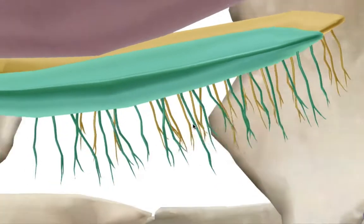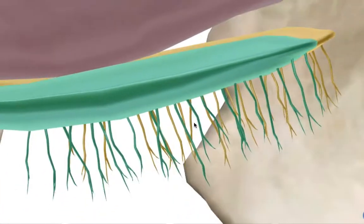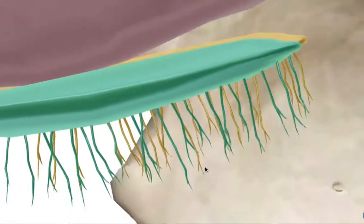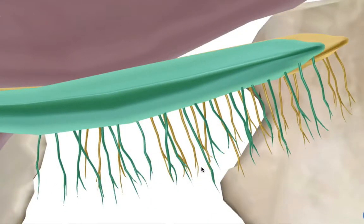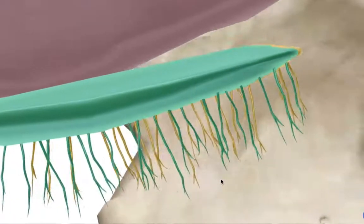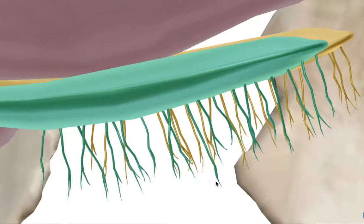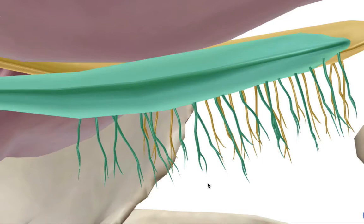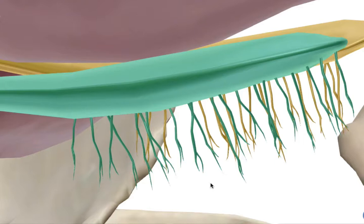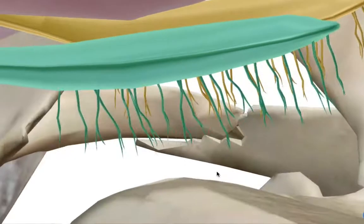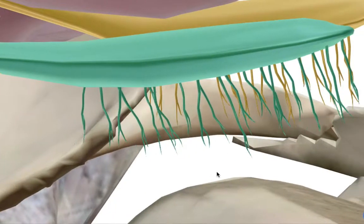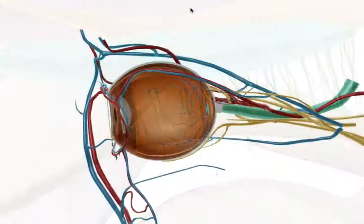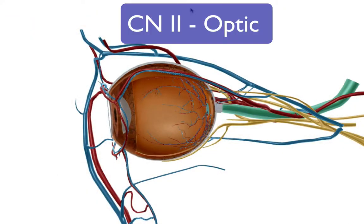Bears can smell carcasses up to 20 miles away downwind. We don't come anywhere near that — often you have to take a good whiff to pick up enough molecules at those binding sites. Another interesting fact: olfactory cells are the only part of the neuron exposed to the external environment. Because they experience harsh conditions, they regenerate approximately every 60 days.